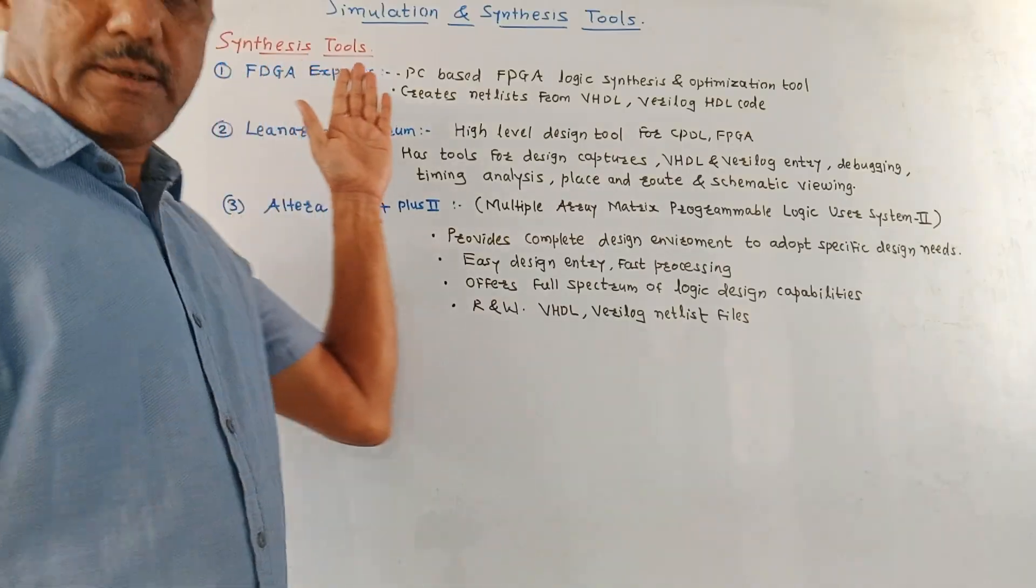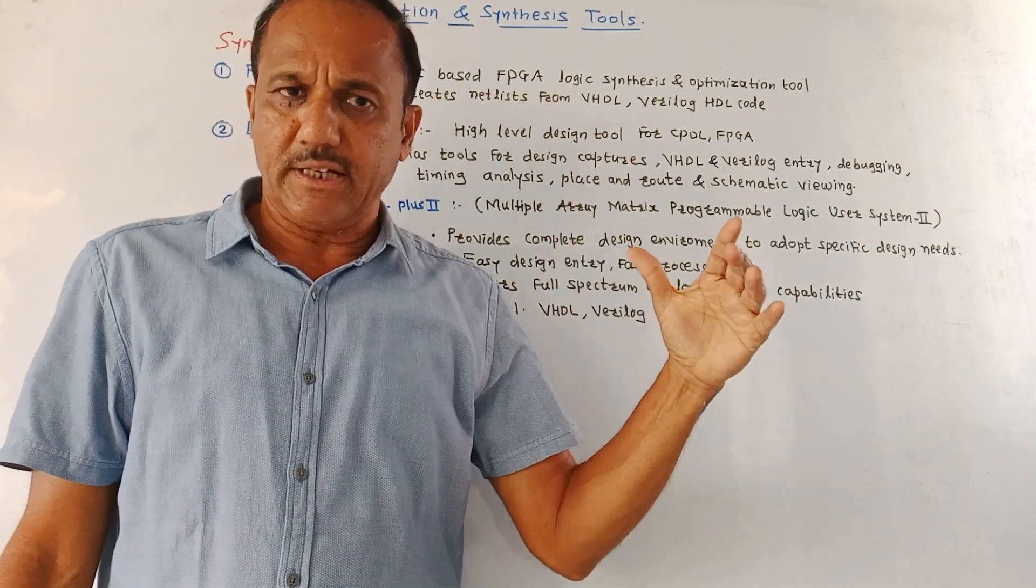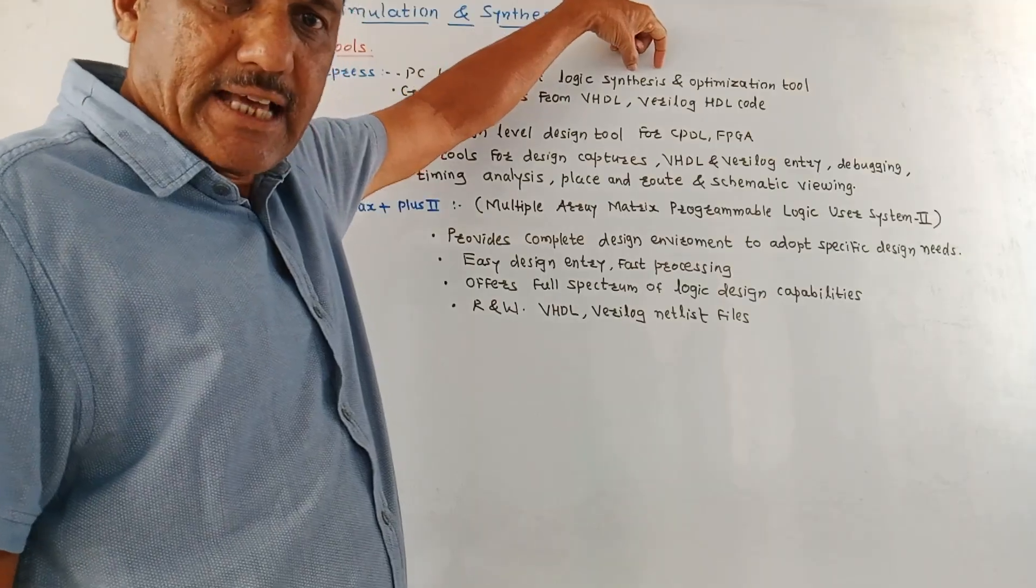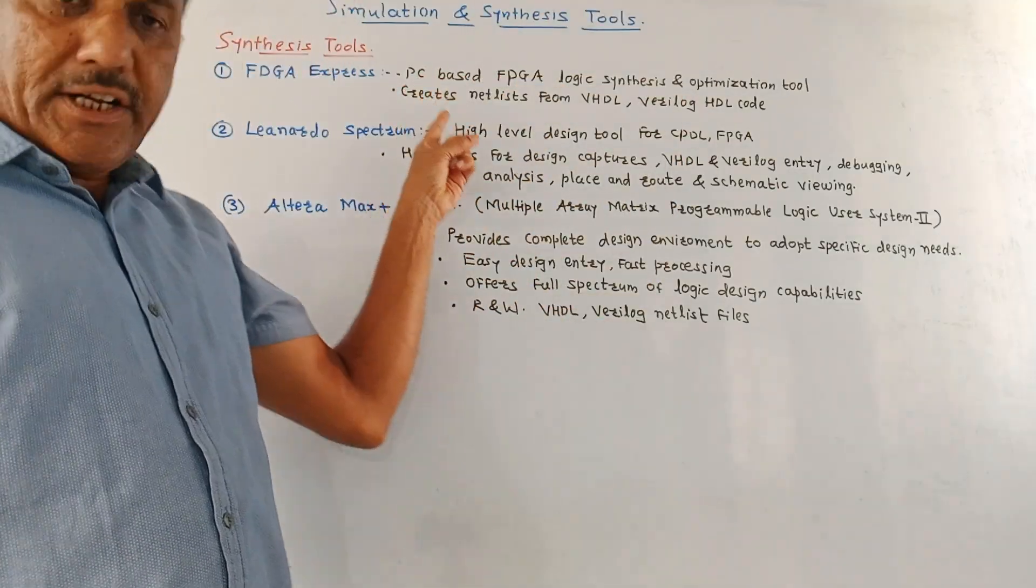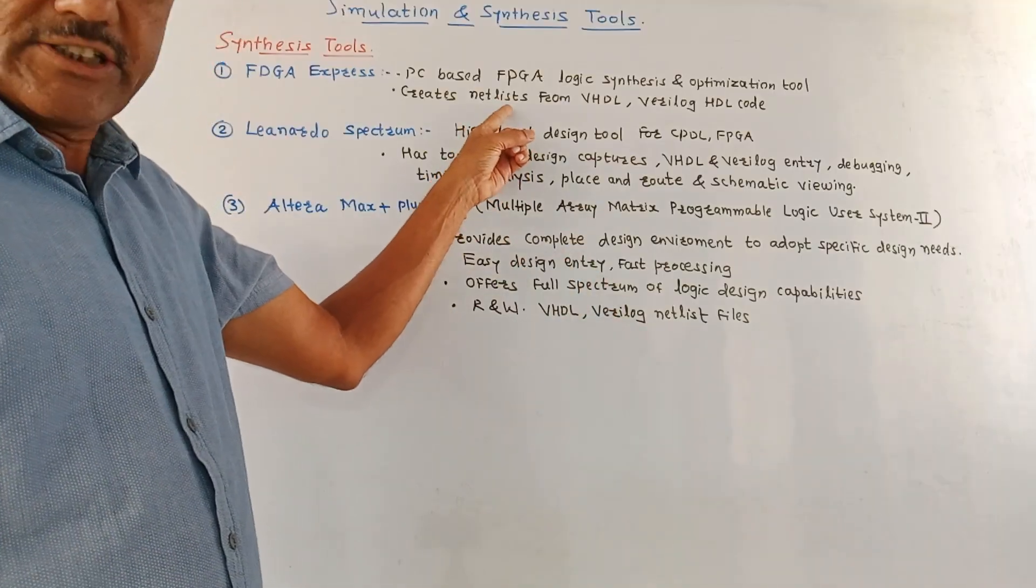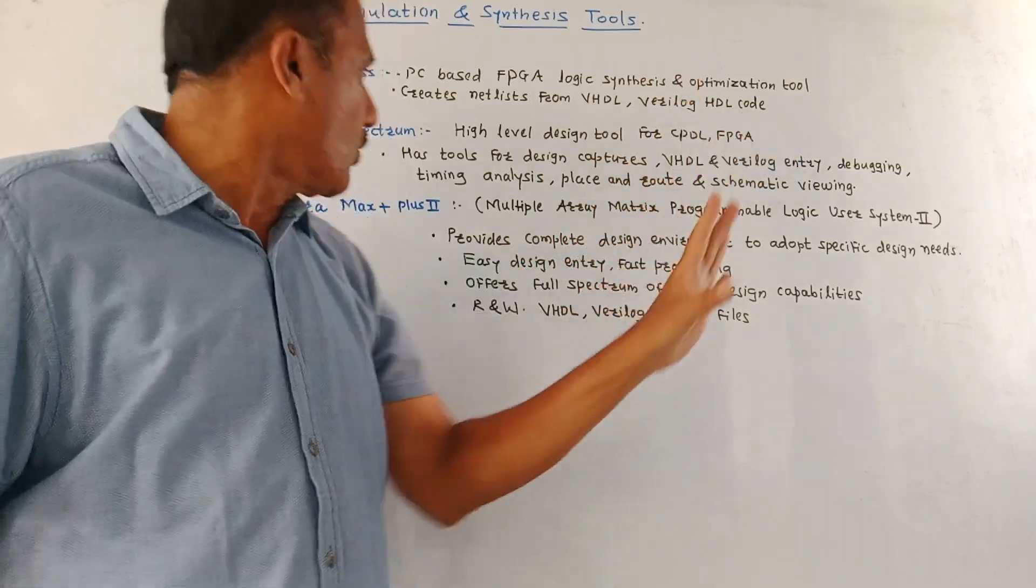Now let us discuss some important synthesis tools. First is FPGA Express. It is basically a PC-based tool used for logic synthesis and optimization. It creates netlists. We already discussed what are the netlists and so on. It creates netlists for VHDL, Verilog, HDL code.